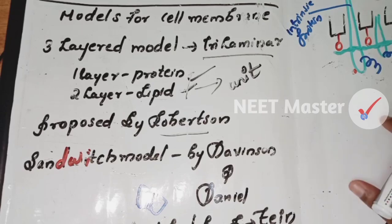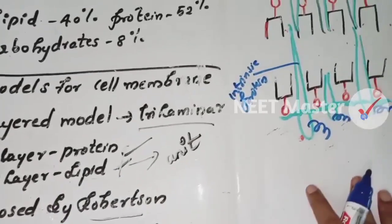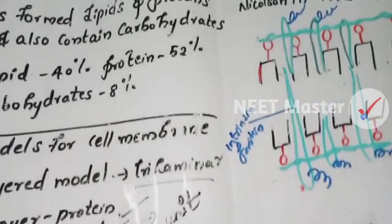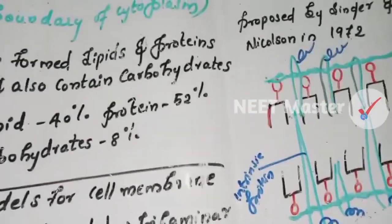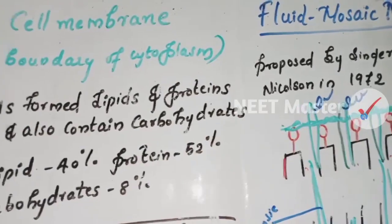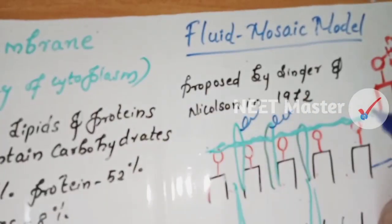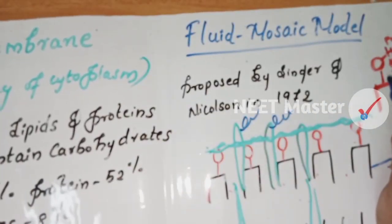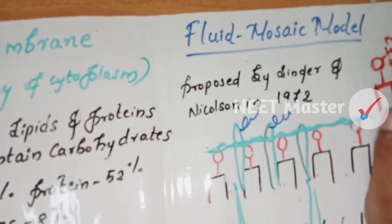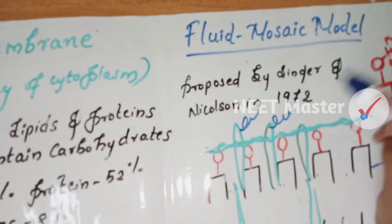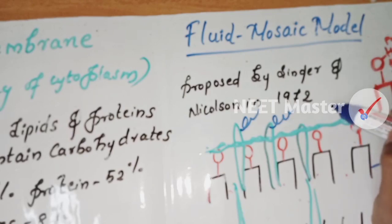These two models were not sufficient to explain all the functions of the plasma membrane. Then the next model is the Fluid Mosaic model, proposed by Singer and Nicolson in 1972.